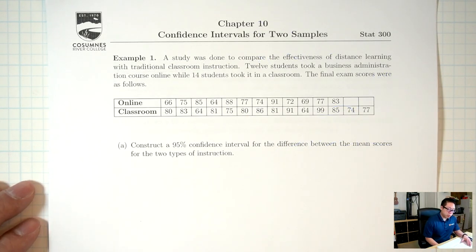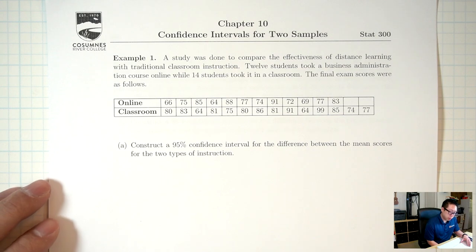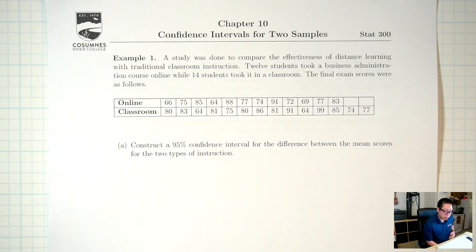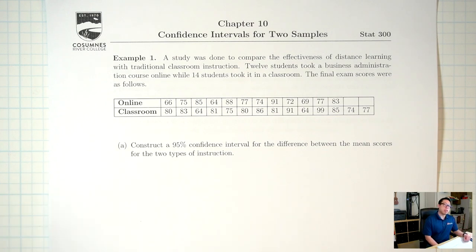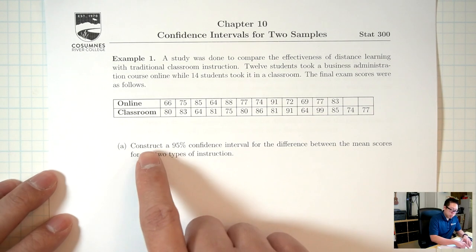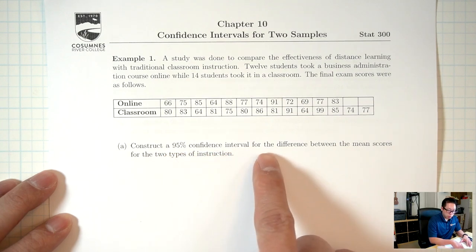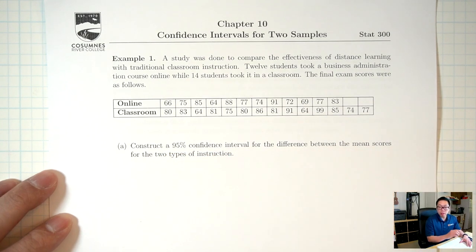Example one: a study was done to compare the effectiveness of distance learning with traditional classroom instruction. 12 students took a business administration course online, while 14 students took it in the classroom. Construct a 95% confidence interval for the difference between the mean scores for the two types of instruction. The first question we need to ask is: are we talking about proportion or mean? It says 'difference between the mean,' so definitely mean.